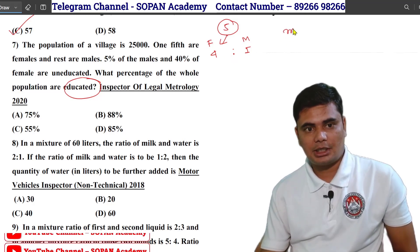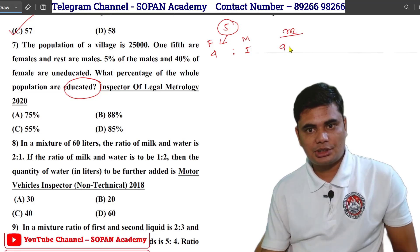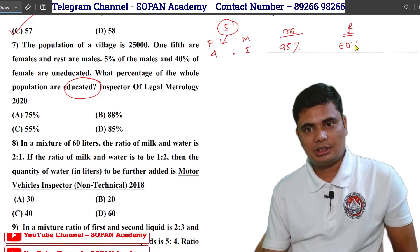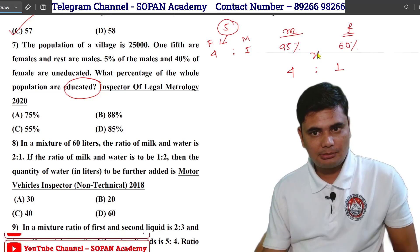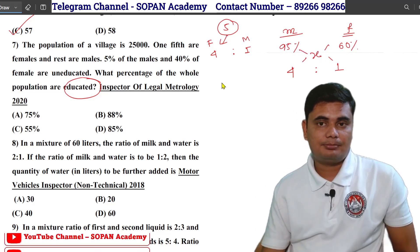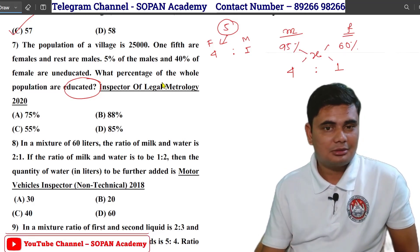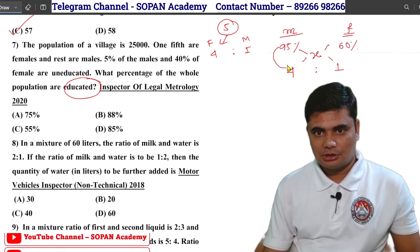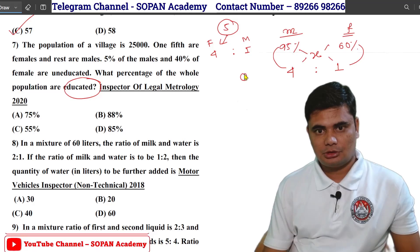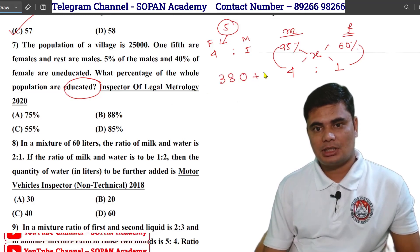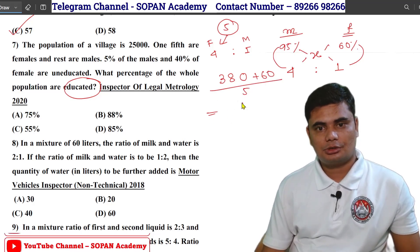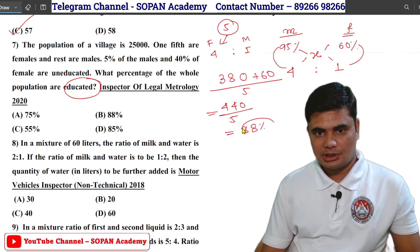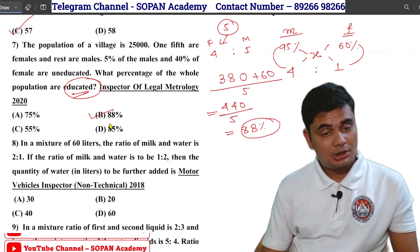With 5% males uneducated, we apply allegation. Males are 95% educated, females are 60% educated. Overall educated percentage — we use allegation. So 5 minus 3 percent. The overall educated percent is 40. Option B.